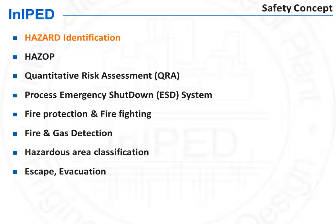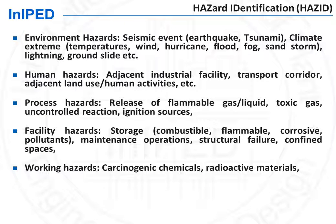The first heading is hazard identification. The identification of hazards to which the plant could be subject is done during a multidisciplinary review session. This session involves safety, process, operation, and plant layout personnel, to name a few. All possible hazards to which a plant could be subject are reviewed using a checklist.